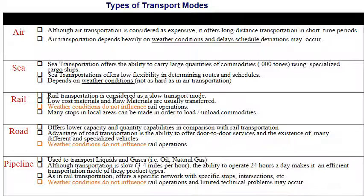Before talking about rail, note that air and sea are both impacted by weather conditions, causing delays. Sea also has difficulty due to transit points along its routes and schedules. However, rail, road, and pipelines are not influenced by weather conditions.